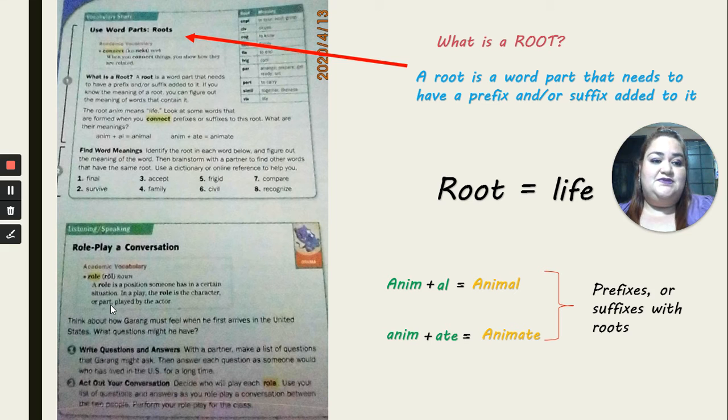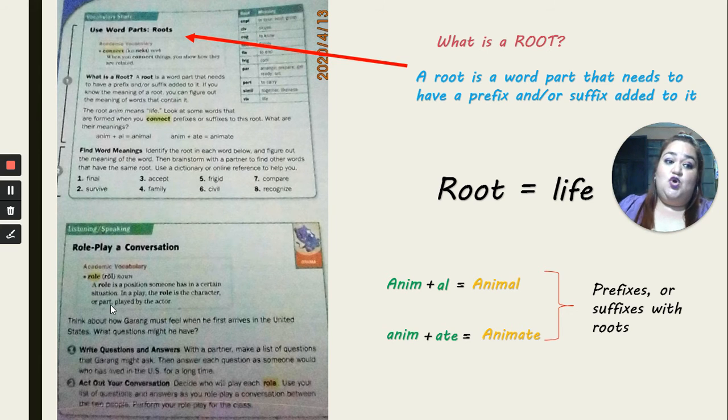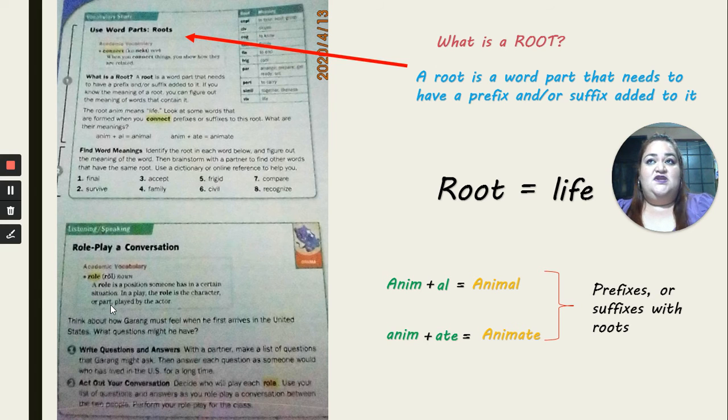I think that you already know what is a root. Remember that a root is going to be a part of a word that actually needs to have a prefix and or a suffix added to it. So what is the meaning of root? Root means life. So for example, we have in here two words that are separated. We have anim, that is the word, and the root, that is al. And when we put it together, we have animal. Then we have anim, that is the word, and ate, that is the root, animate. Remember that these are prefixes or suffixes that are together next to a root. So in this one, in the book, you're going to have this list of words. I'm sorry, of roots.